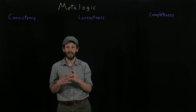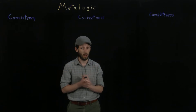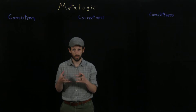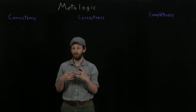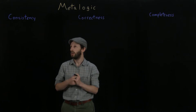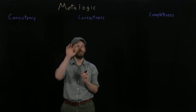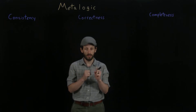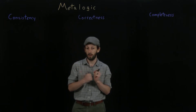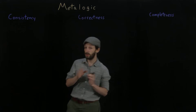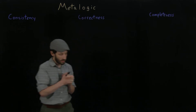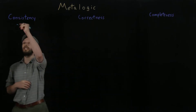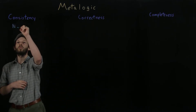We're going to discuss different concepts about the logic itself using methods and ideas that are outside of the logic. There are three key things we're going to dive deeper into in future lectures: the first is consistency, the second is correctness, and the third is completeness. All three of these tie together the proof system and the semantics that go with it. Starting with consistency: we say a theory is consistent if there is no way to derive a contradiction.